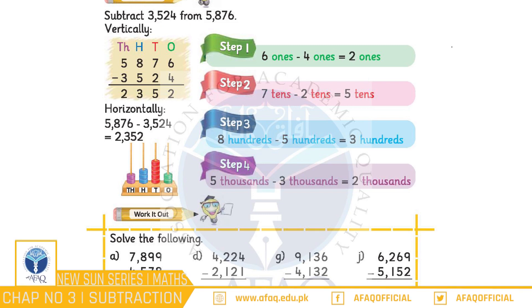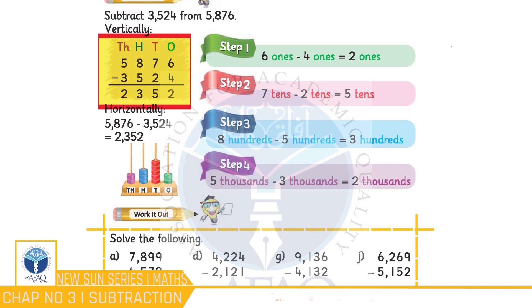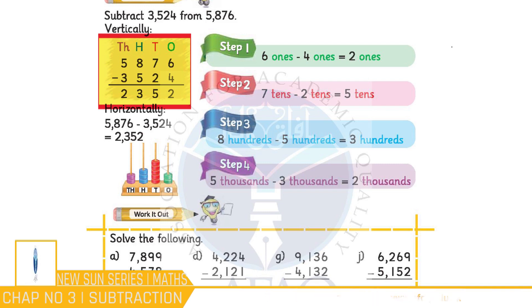Jiske liye hamein is example ko samajhna hoga jismein aap dekh sakte hain ki 5,876 mein se 3,524 ko subtract kiya jaana hai. Jiske liye hamein 1s place par maujood values ko pehle subtract karna hoga, yani 6 ones minus 4 ones jiska jawab hoga 2 ones. Aur iske baad 10s place par maujood values ko subtract karna hoga.